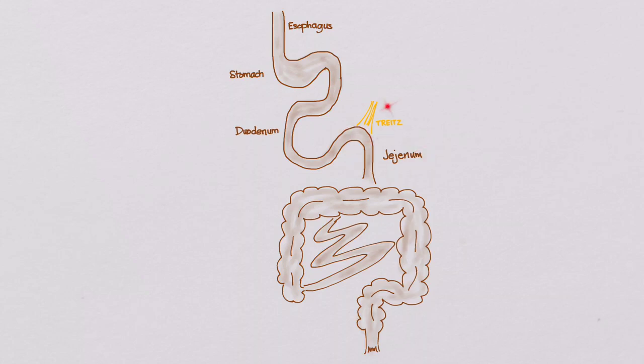The ligament of Treitz is a dividing line between the duodenum and the jejunum. Proximal to it is the foregut, and distal to it is the midgut. The blood supply is also different, with the proximal portion getting blood from the celiac artery and the midgut area getting it from the superior mesenteric artery.